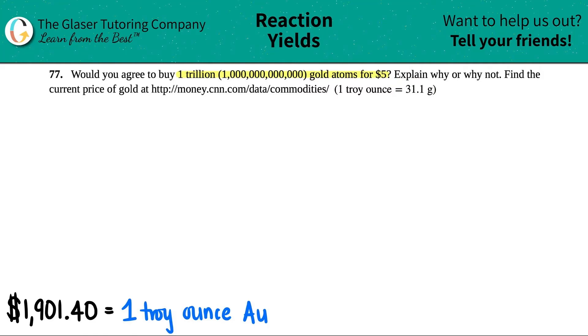So a friend comes up to me and says, hey, you want to buy one trillion gold atoms for five dollars? I say hold that thought, I'm just going to do a quick conversion to see if it's even worth it. We have one trillion gold atoms. Let's put this into scientific notation: one times 10 to the twelfth atoms of gold, Au.